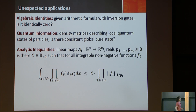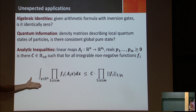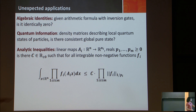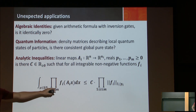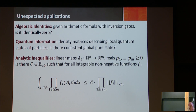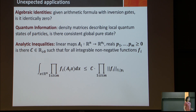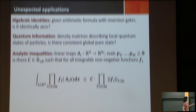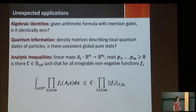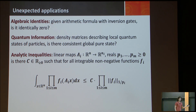The third field is analytic inequalities. If I give you linear maps AI from R^n to R^{n_i}, and I give you real numbers P1 up to Pm, I want to know if there exists an inequality of this form — that is, if there exists some constant C, independent of these functions, such that for all integrable non-negative functions f_i from R^n to the reals, this inequality holds. This is called the Brascamp-Lieb inequalities, and they generalize essentially all the inequalities you can think about.